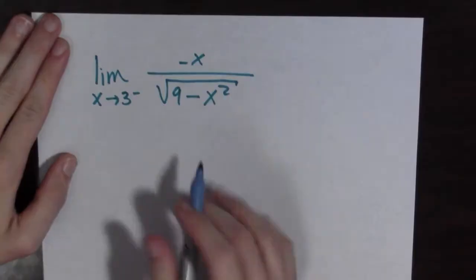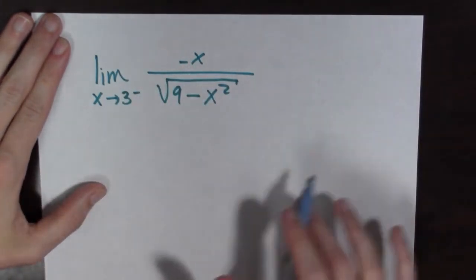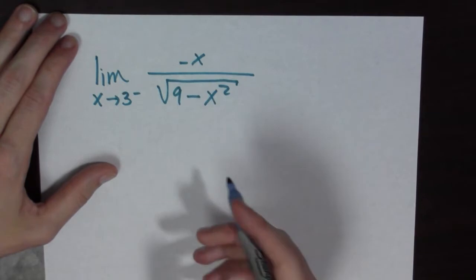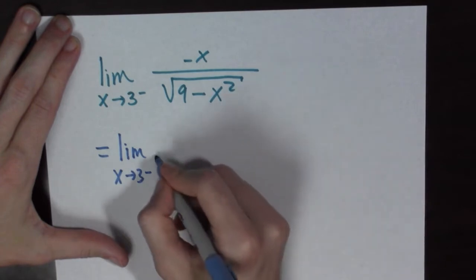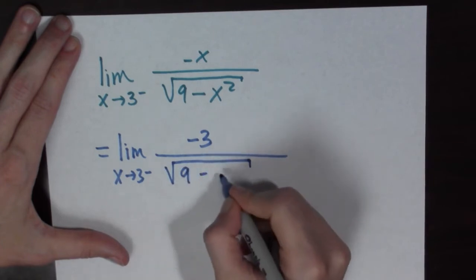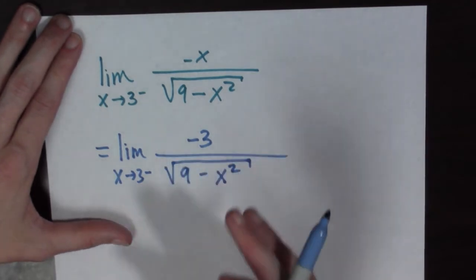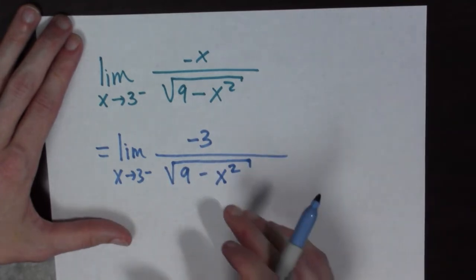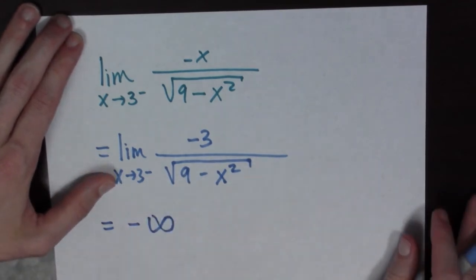Next example! We have the limit as x goes to three from the left of negative x over the square root of nine minus x squared. Now if we're going to three from the left, the denominator is always positive and getting closer and closer to zero. So this goes to negative infinity. Done!